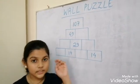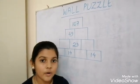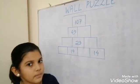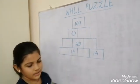The numbers in the upper row are the sum of the two numbers below. This is called wall puzzle. Let's solve this one.